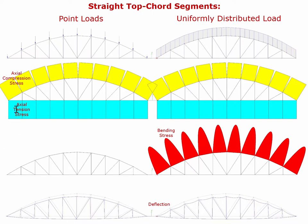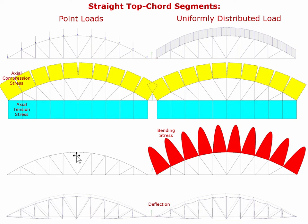When we do the analysis, we see that the axial compression is very similar between the point-load case and the continuous-load case. So we're not seeing much difference in axial compression based on discrete loads versus continuous loads. The same is true of the axial tension in the bottom chord or tie member.